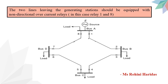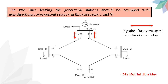The first rule is that the two lines leaving the generating station should be equipped with non-directional overcurrent relays. In this case, those are relay 1 and relay 8. Relay number 1 is equipped with the non-directional overcurrent relay, and similarly relay number 8. This is the symbol for the non-directional overcurrent relay.